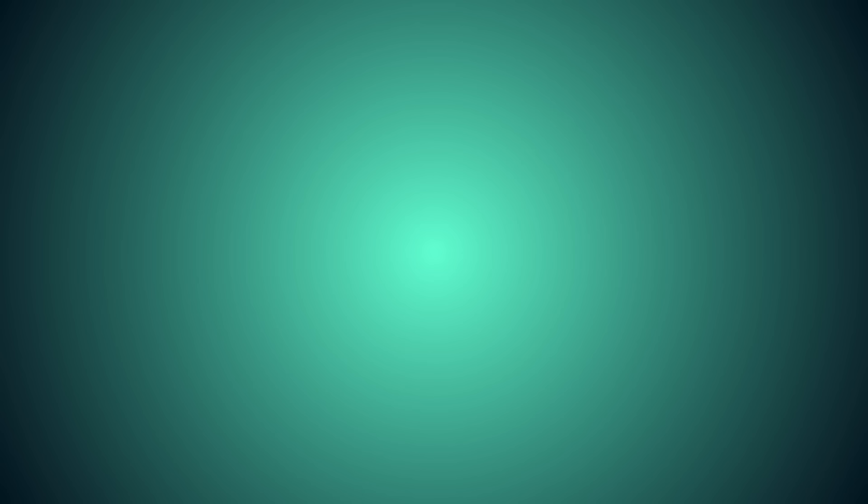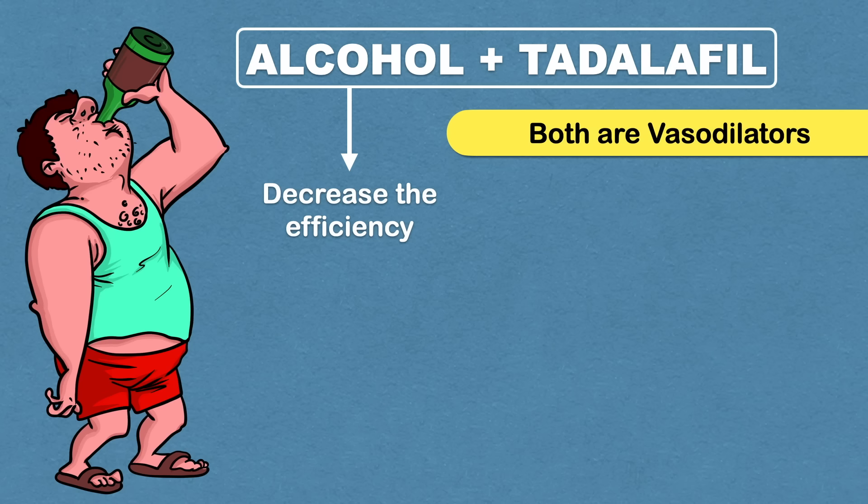Also Cialis and alcohol both act as vasodilators. Vasodilators are substances that lower your blood pressure by relaxing the walls of your blood vessels which then allow the blood vessels to open wider.